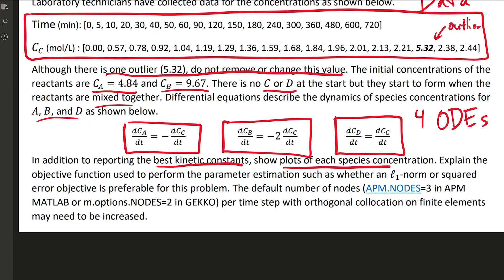Now, we want to determine the best kinetic constants that fit that and plot each species concentration. We'll explain the objective function and perform the parameter estimation, whether an L1 norm or squared error objective is preferable for this problem.